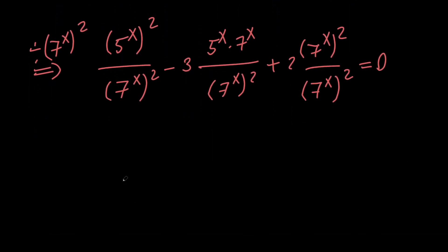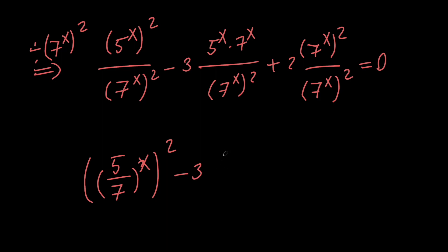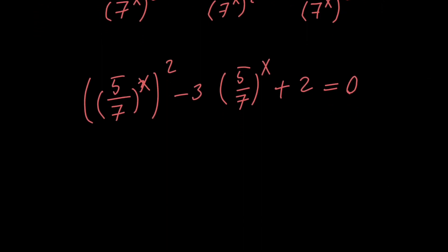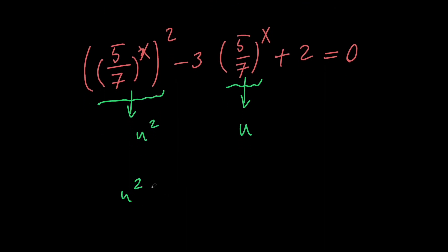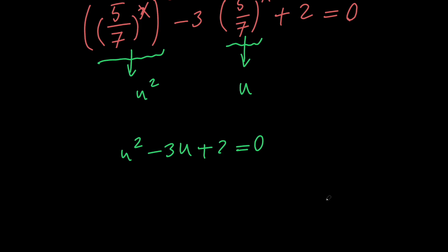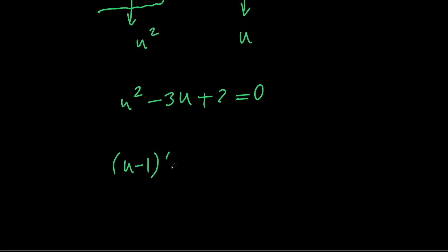We simplify to get (5/7 to the x) squared minus 3 times (5/7 to the x) plus 2 equals 0. Using the substitution u equals (5/7) to the x, this becomes the quadratic u squared minus 3u plus 2 equals 0. We can factor the left-hand side into (u minus 1)(u minus 2), giving us u equals 1 or u equals 2.